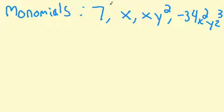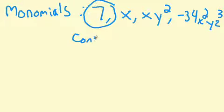It's just a single term by itself. Numbers by themselves, like our 7 here, is a constant. So I'll write that for you here, constant.